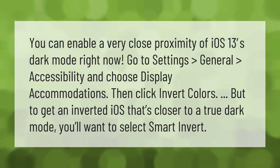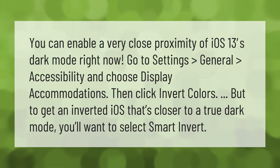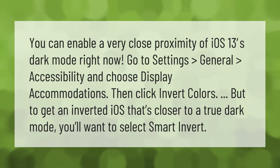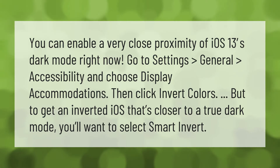You can enable a very close proximity of iOS 13's dark mode right now. Go to Settings, General, Accessibility, and choose Display Accommodations, then click Invert Colors. To get an inverted iOS that's closer to a true dark mode, you'll want to select Smart Invert.